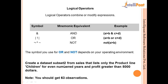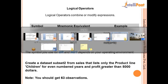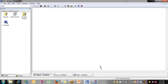Create a dataset subset2 from the sales dataset that lists only product line children, for even numbered years, and profit greater than $500. You should get 63 observations — that's the exercise they've given. Let me go to the SAS environment so we can perform the same task. I have already opened a SAS session.